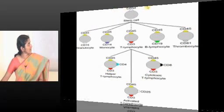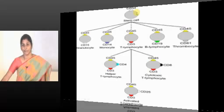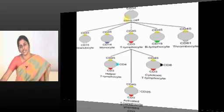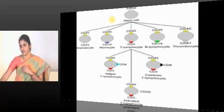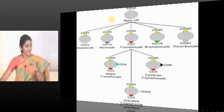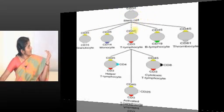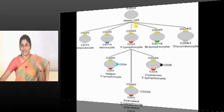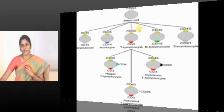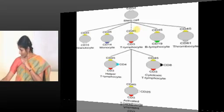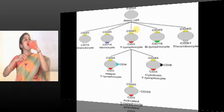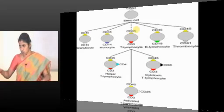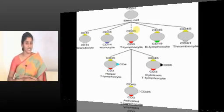The stem cell marker is CD34 — must-know. CD34 positivity is also seen in mast cells. When stem cells differentiate and mature, they lose CD34 positivity and start expressing lineage markers. CD45 is the common leukocyte antigen — every white blood cell expresses CD45.